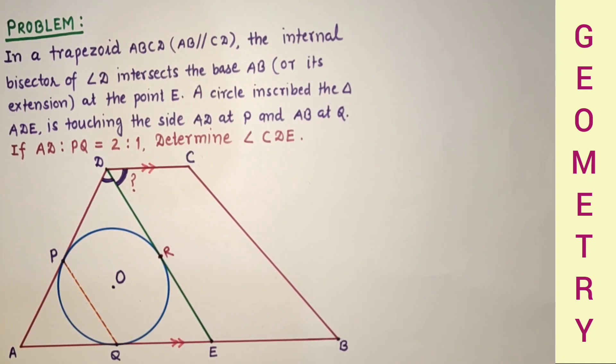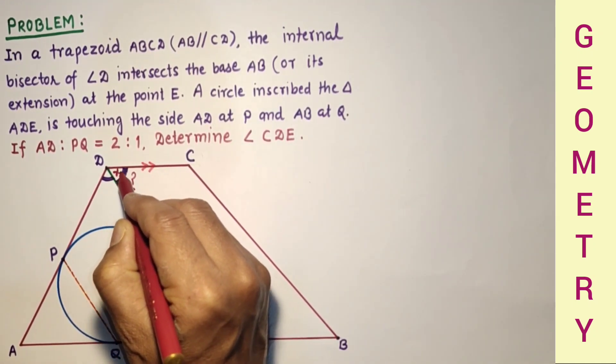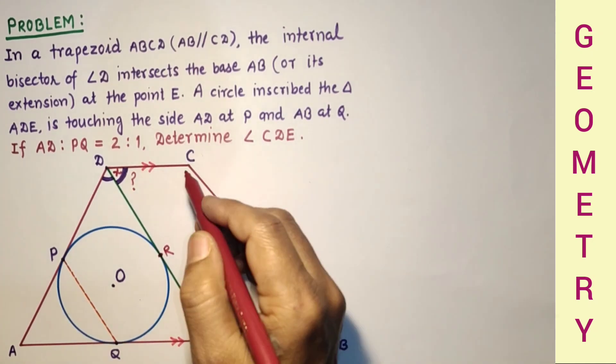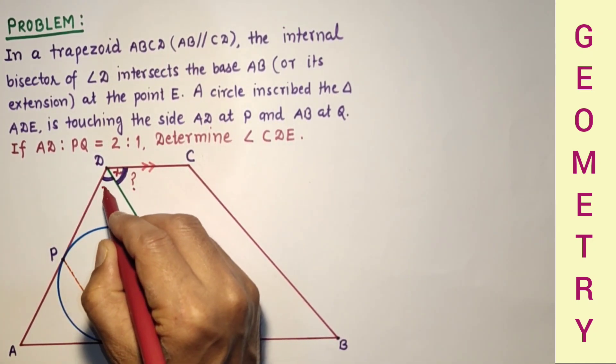We are concerned with angle CDE. We have to find this angle. Let us suppose this angle is X. As DE bisects this angle, this angle will also be X.